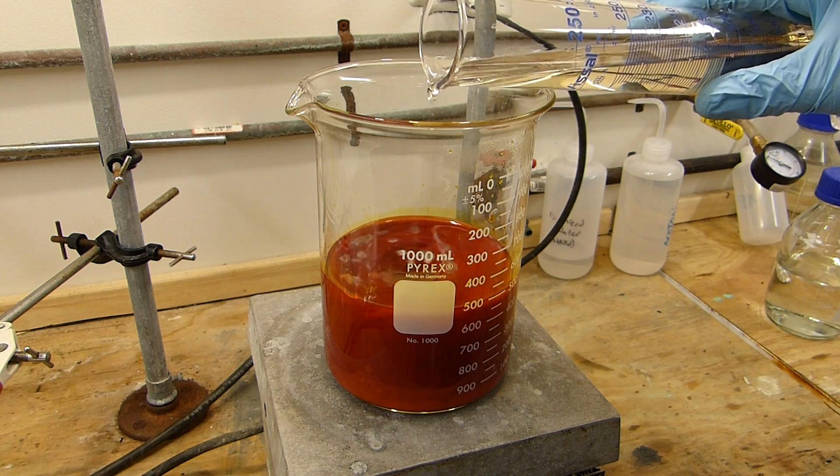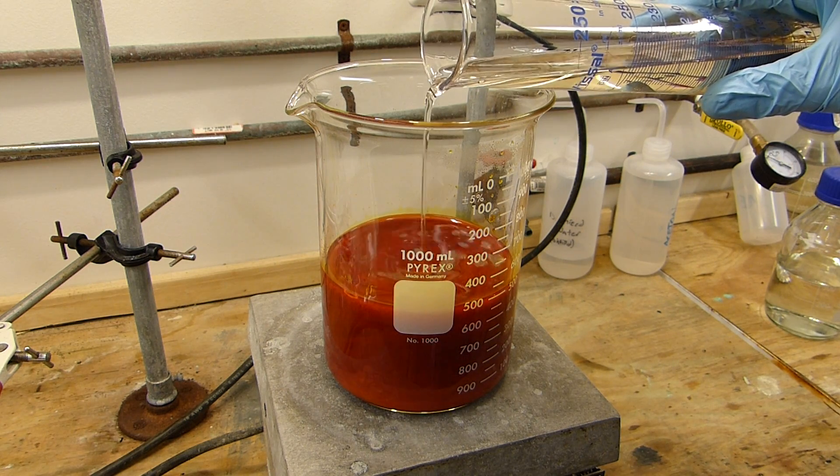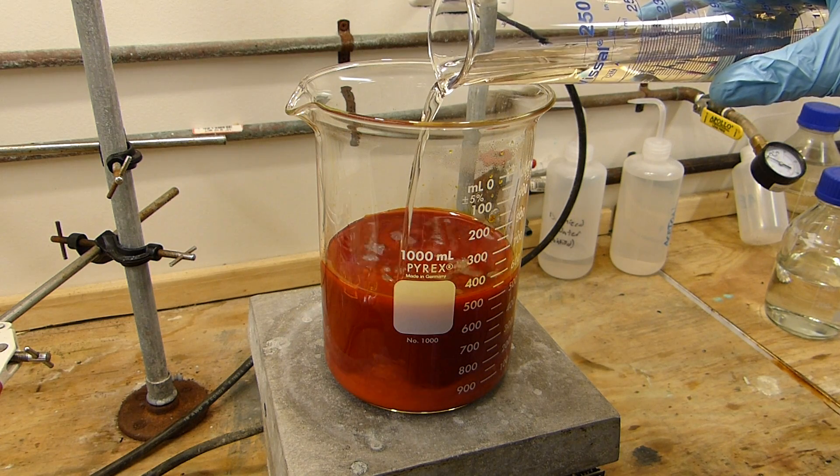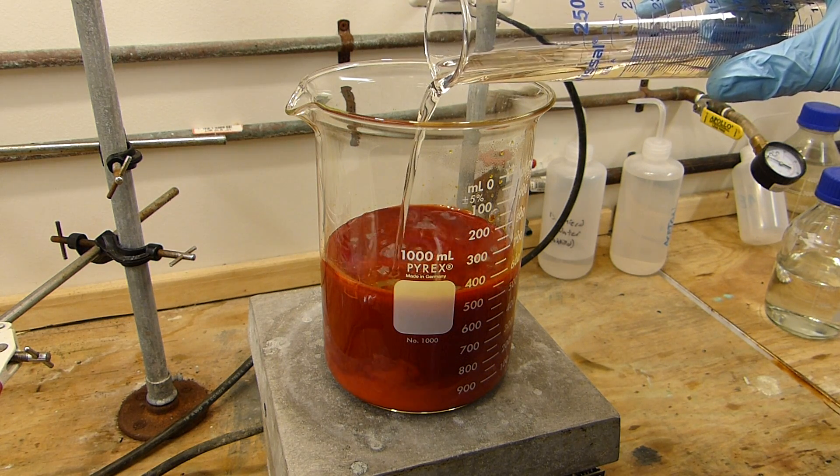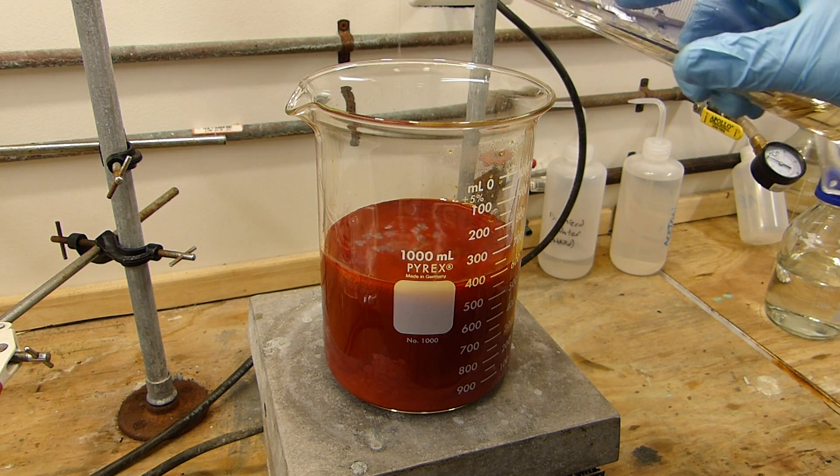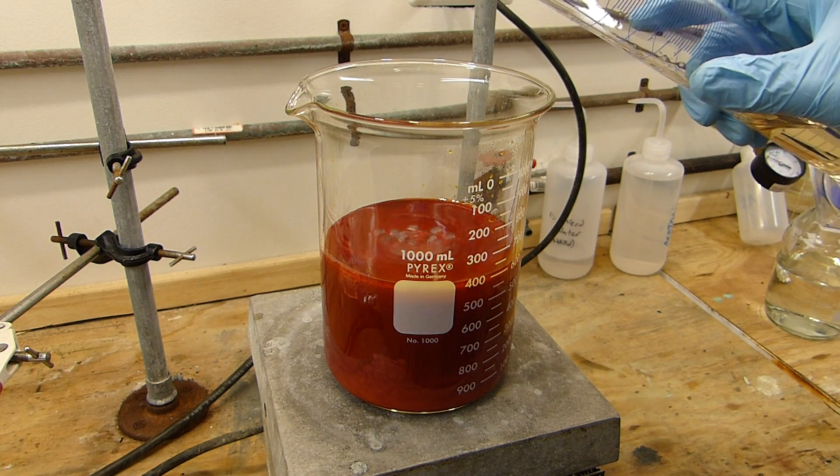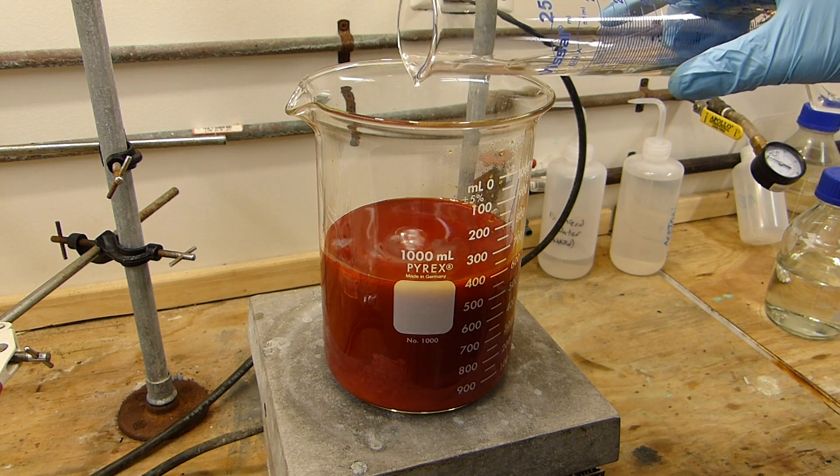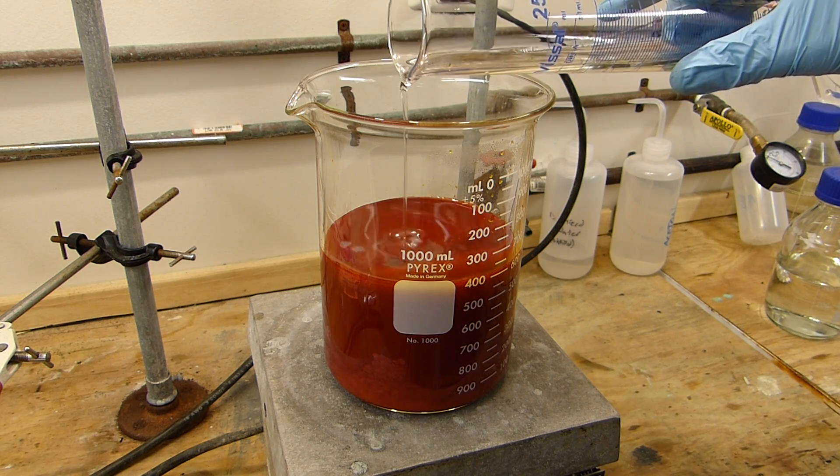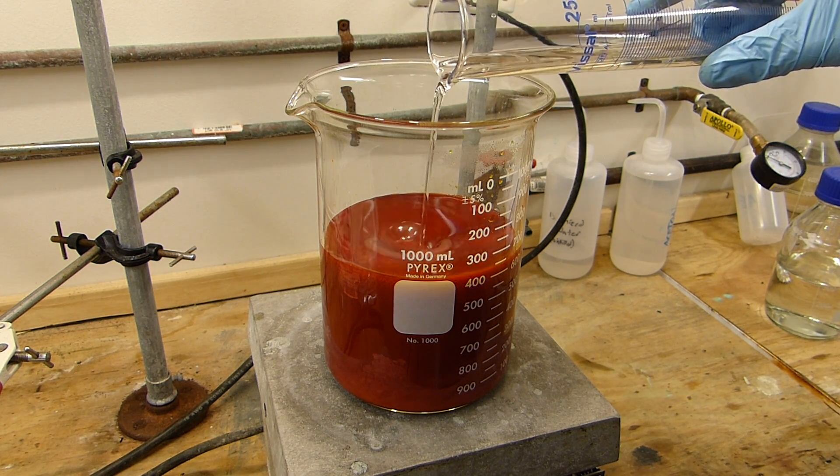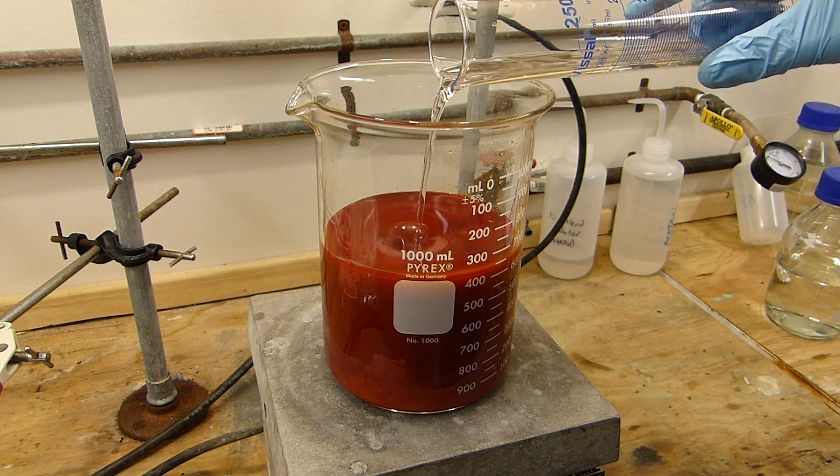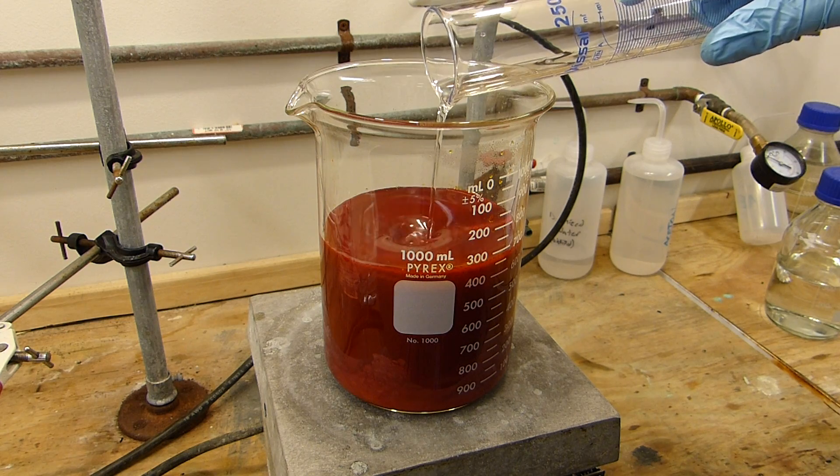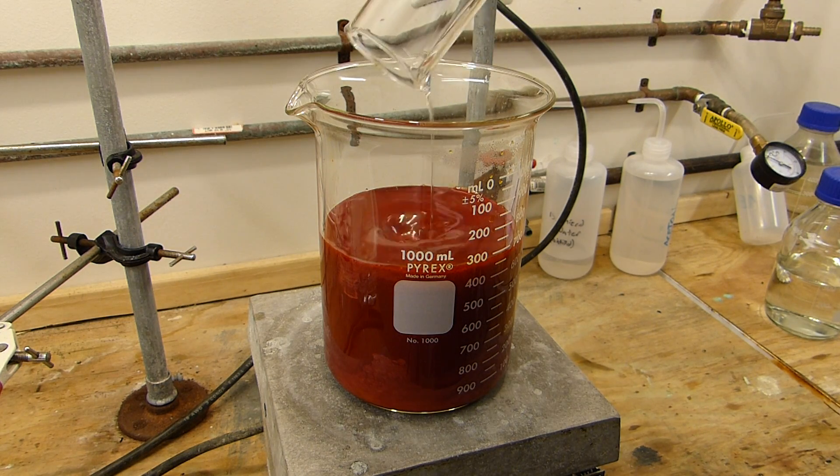And you can see there that is the chromium trioxide precipitating out. You have to add the sulfuric acid slowly because adding it rapidly precipitates dichromate which then quickly converts to chromium trioxide. But it's okay because the dichromate will eventually convert to trioxide with prolonged stirring. Just finish adding all of that.